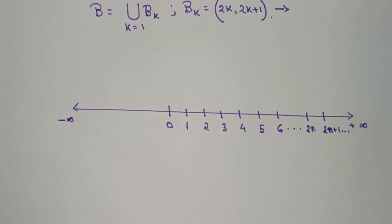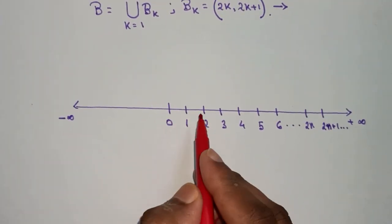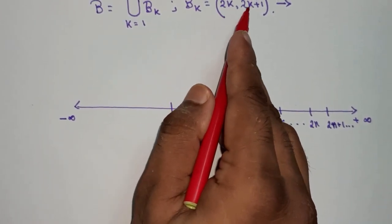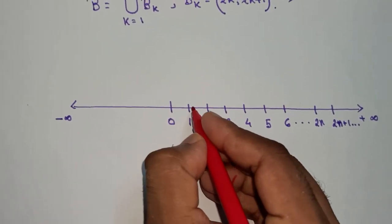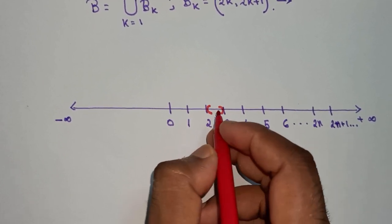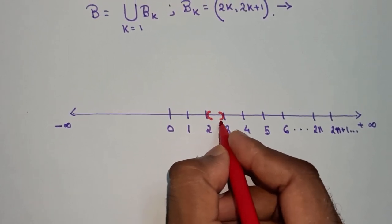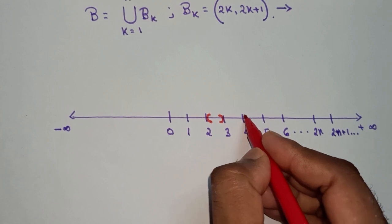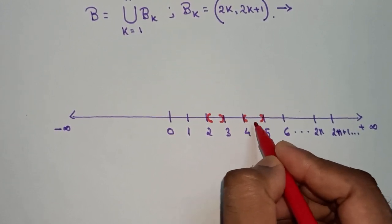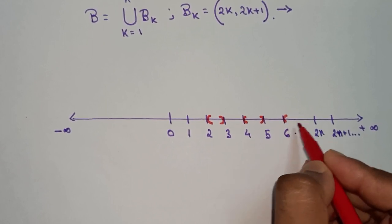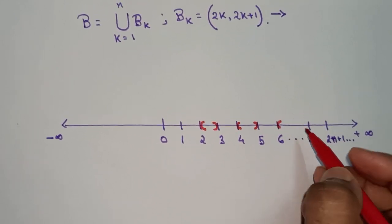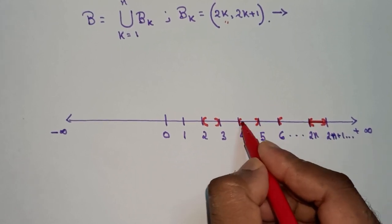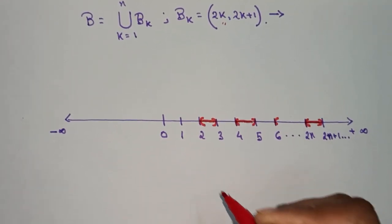Let us color the portions of the B_k's. When k equals 1, it becomes the open interval (2, 3) — the open interval includes all points between 2 and 3 but excludes 2 and 3. When k equals 2, it is the open interval (4, 5). When k equals 3, the open interval is (6, 7). When k equals N, it is that corresponding open interval. Let us paint them. Now, it remains to find the complement of this B.